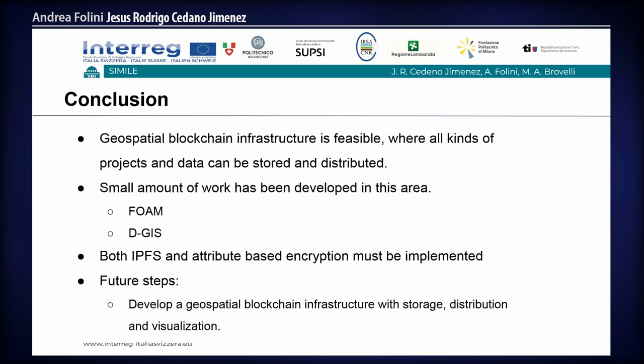In conclusion, we can see that the geospatial blockchain is feasible to be used in projects for data sharing. Although a small amount of work has been done by Foam and DGIS, it represents good progress in developing the concept. Both IPFS integration and attribute-based search must be implemented in future steps to develop a real geospatial infrastructure to share projects with the community.